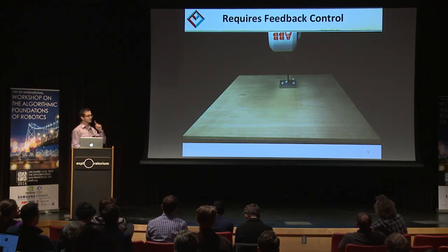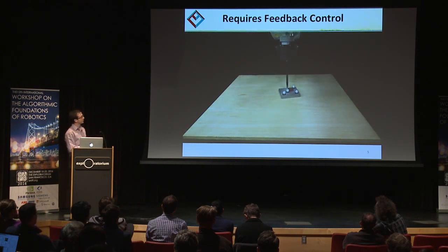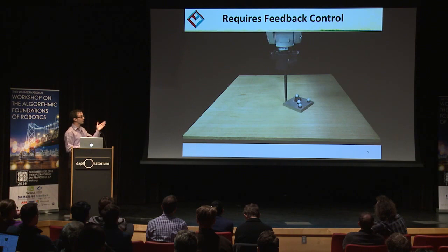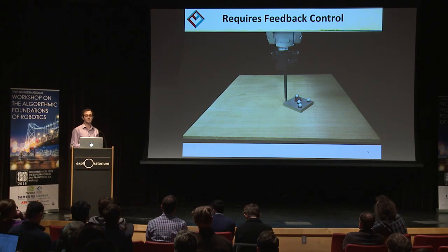This is the problem we're trying to solve. We want the slider to go in a straight line trajectory at a constant velocity. But if your robot isn't reactive, you can't achieve this — you need feedback control in order to stabilize this unstable system.